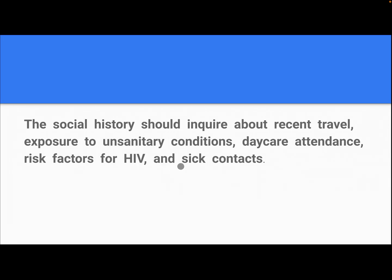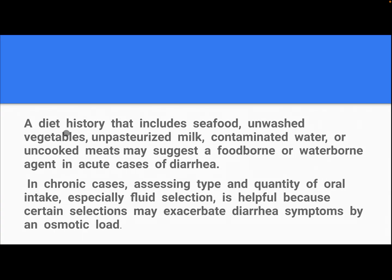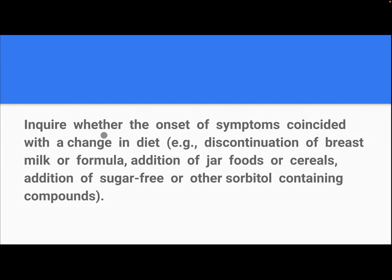The social history should inquire about recent travel, exposure to unsanitary conditions, daycare attendance, risk factors for HIV, and sick contacts. A diet history that includes seafood, unwashed vegetables, unpasteurized milk, contaminated water, or undercooked meats may suggest foodborne or waterborne agents in acute cases. In chronic cases, assessing type and quantity of oral intake, especially fluid selection, is helpful because certain selections may exacerbate diarrhea symptoms by an osmotic load.